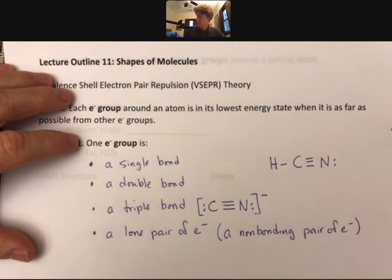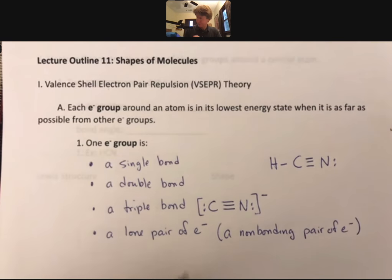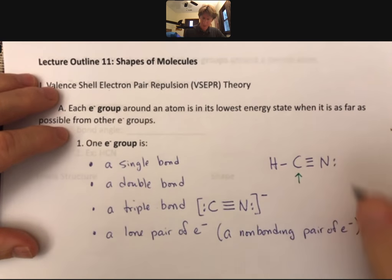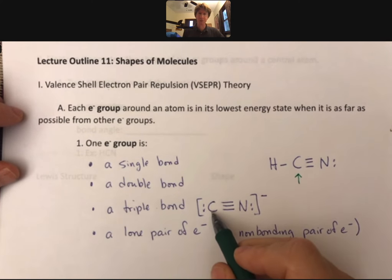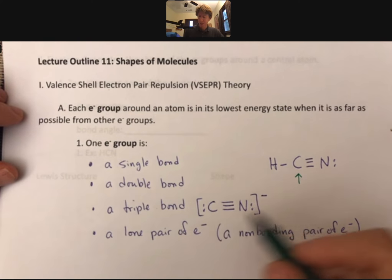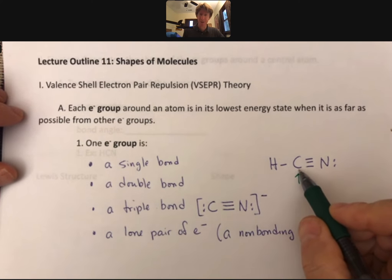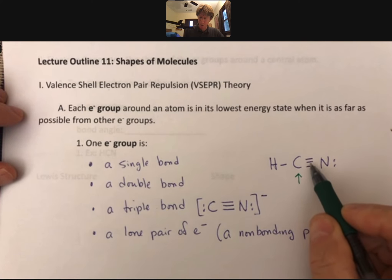We would only talk about the shapes for central atoms. This one doesn't even have a central atom, it just has two end atoms. We're going to only be talking about this for central atoms, and in this regard, a triple bond is one electron group.